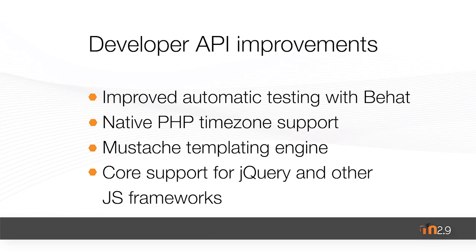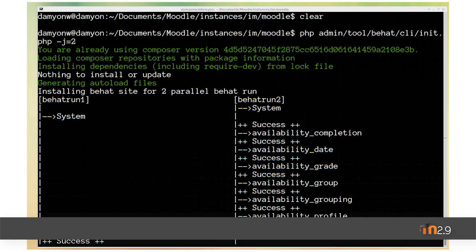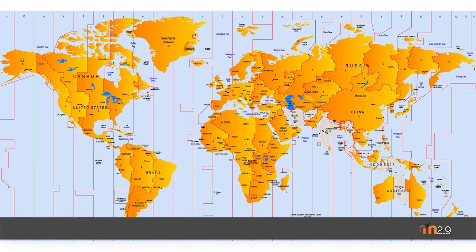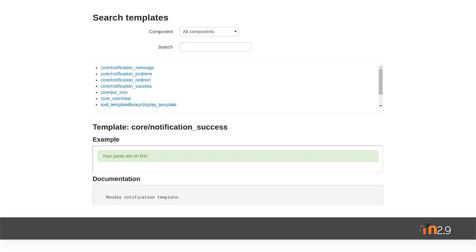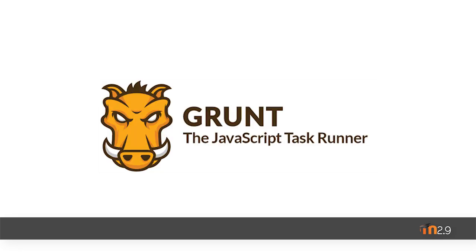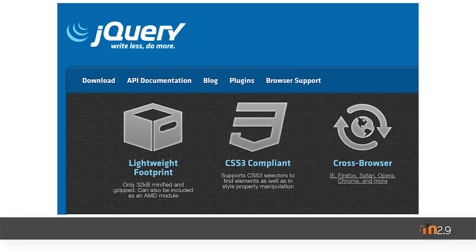There are a number of updates for developers to help enable them to make higher quality plugins and themes. Some of the support includes additional BHAT tests, native time zones support, native support for mustache templates in themes, and a variety of JavaScript frameworks including jQuery.